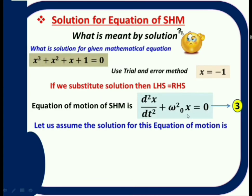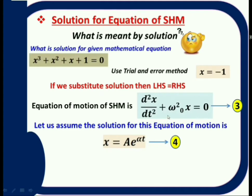Using the same trial and error method, let us assume a solution for the SHM equation: x = A·e^(αt), where A is the amplitude and α is an arbitrary constant — both to be determined. If this is the correct solution, then substituting it into d²x/dt² + ω₀²x = 0 should give left-hand side equal to right-hand side. Let us verify this.